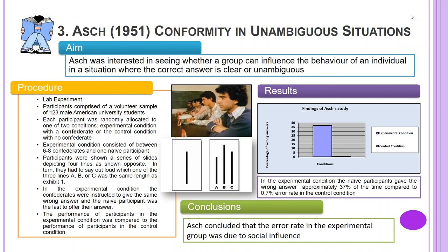ASH's 1951 research into conformity in an unambiguous situation. ASH's aim was to see whether a group can influence the behaviour of an individual in a situation where the correct answer is clear or unambiguous.